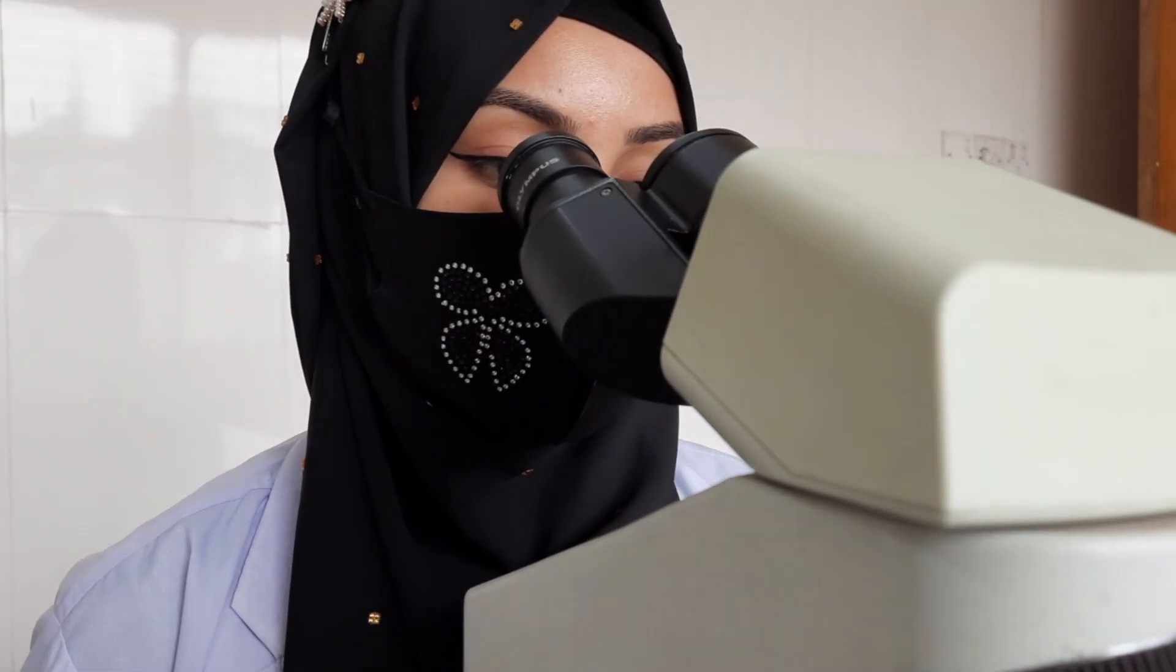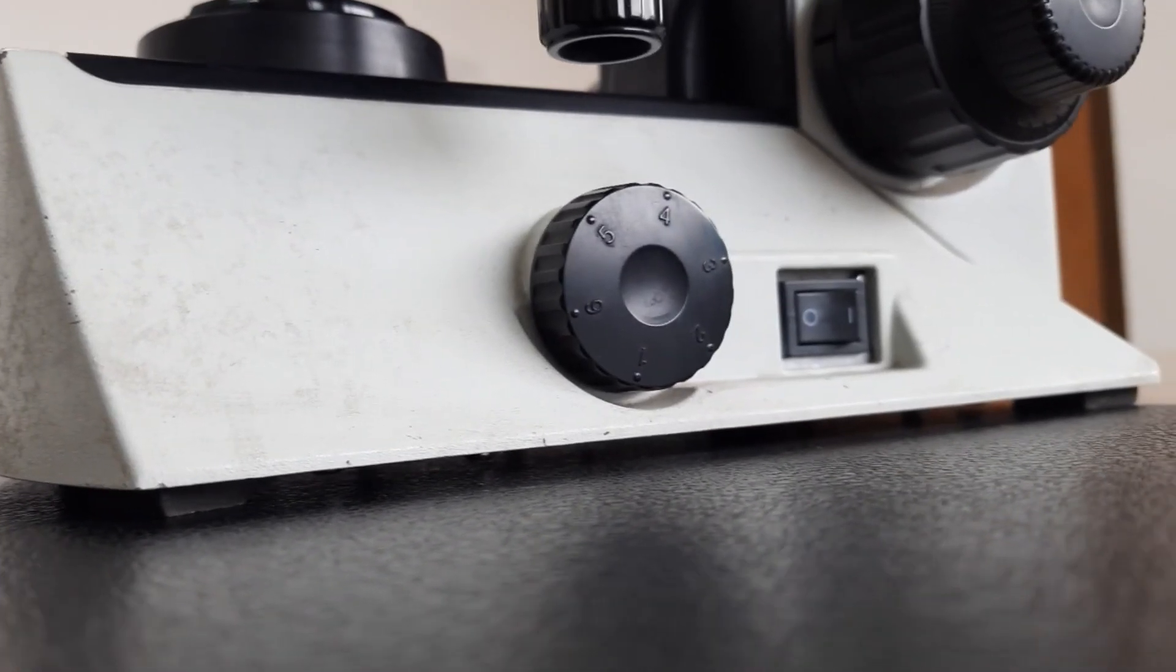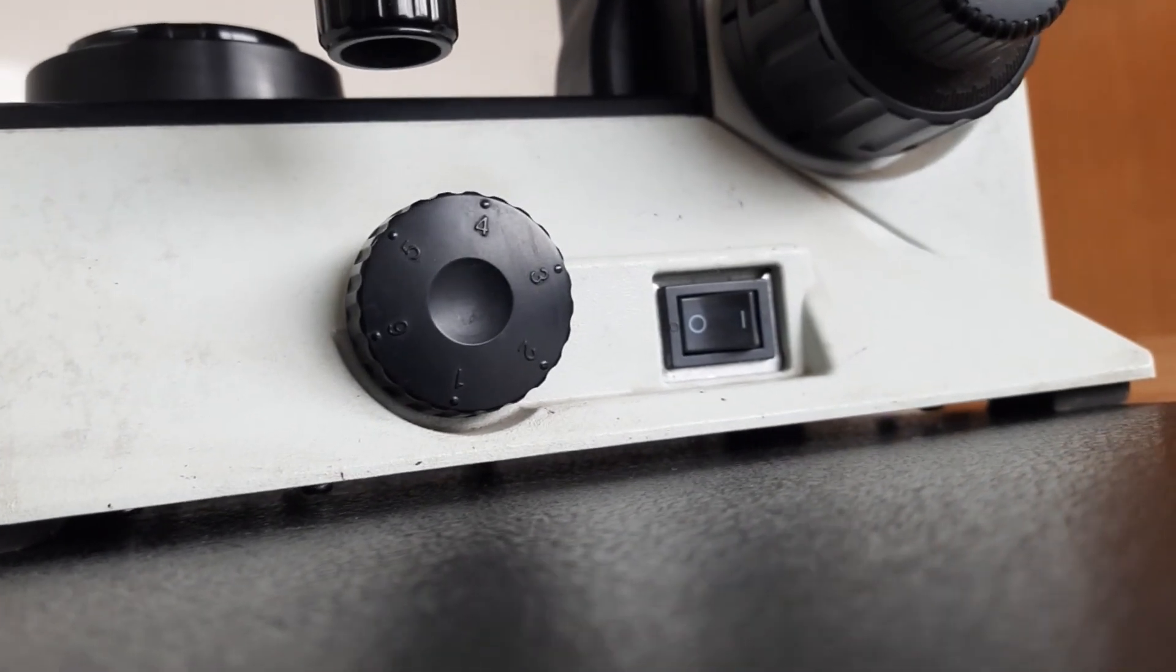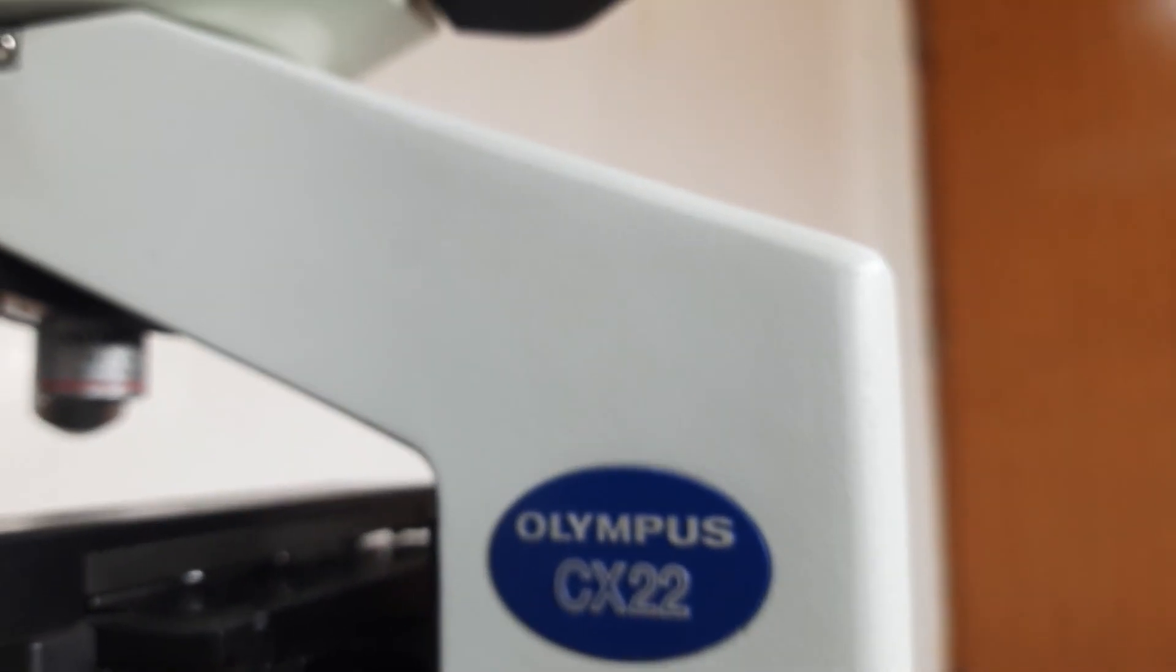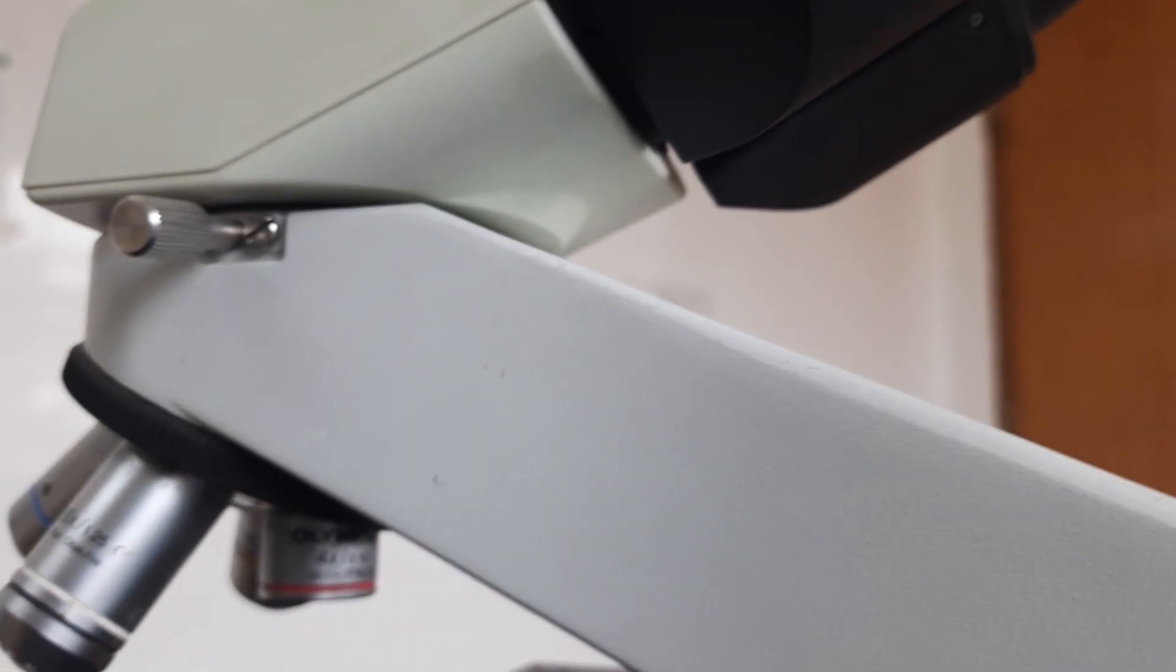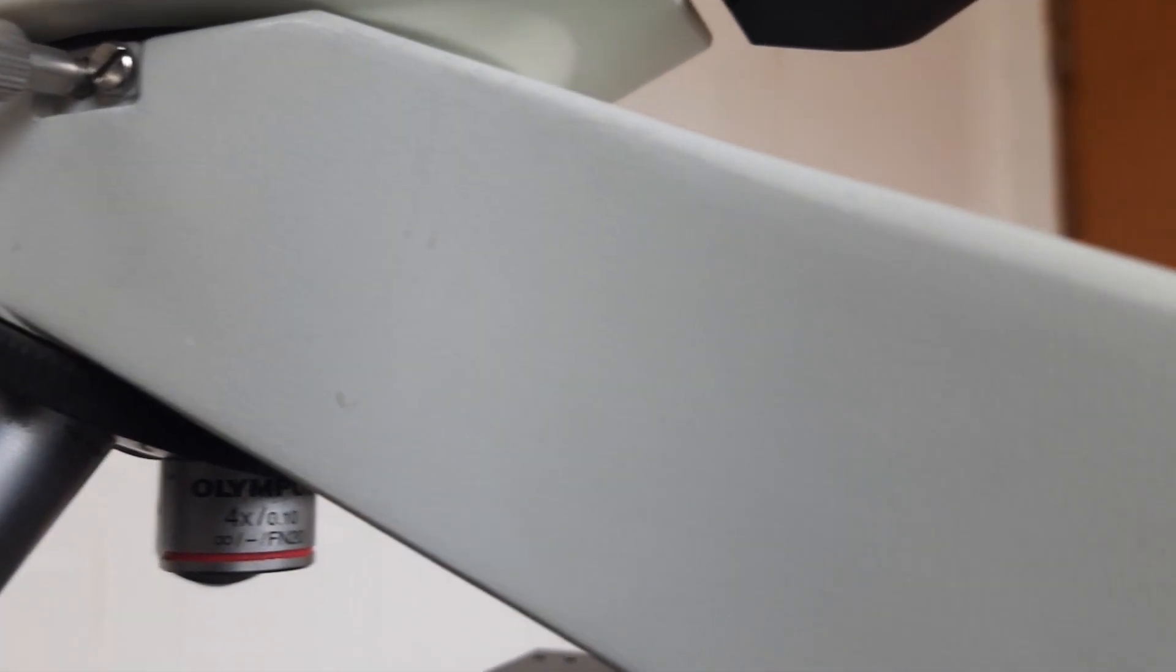The base is what the microscope sits on. It provides stability and support for the entire instrument. The arm is the curved or straight vertical part that connects the base to the head of the microscope. It allows you to carry and hold the microscope securely.